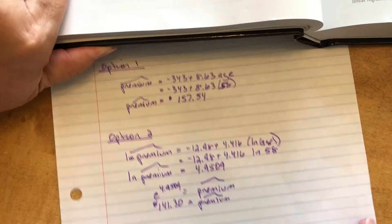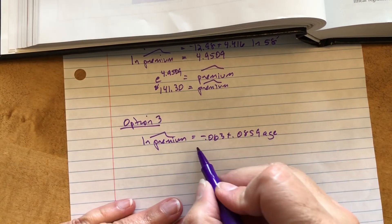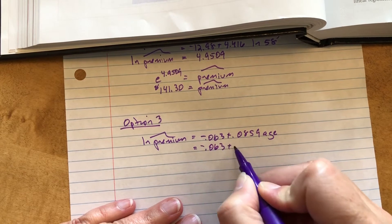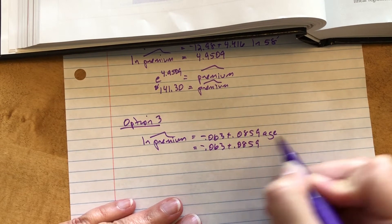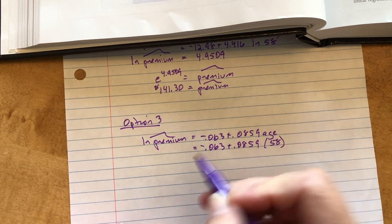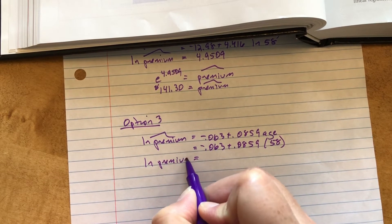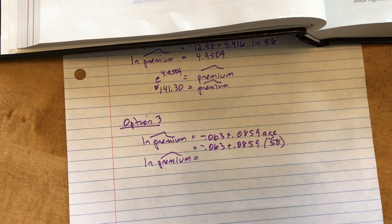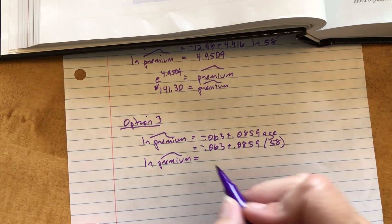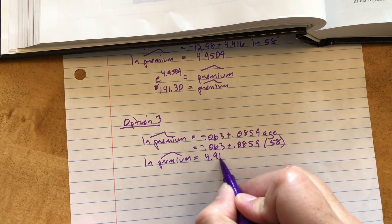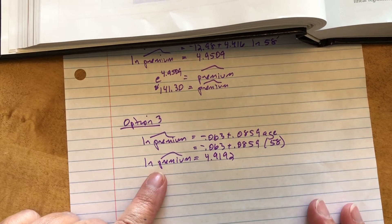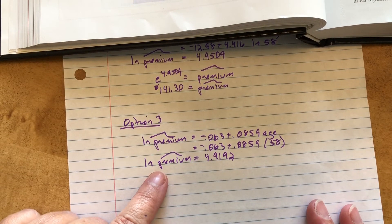Let me come down here and plug that in. So again, I just have to plug in the age, which was 58. And let me write all this down. Plug that in the calculator. And we get 4.9192. And again, I've got to rewrite this as an exponential to solve for the premium. So base of a natural log is E.